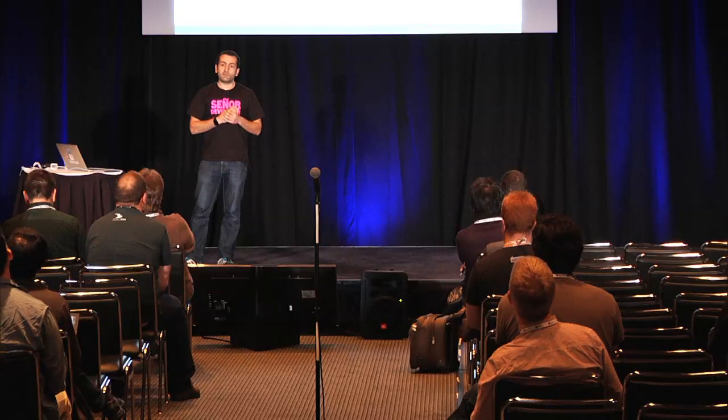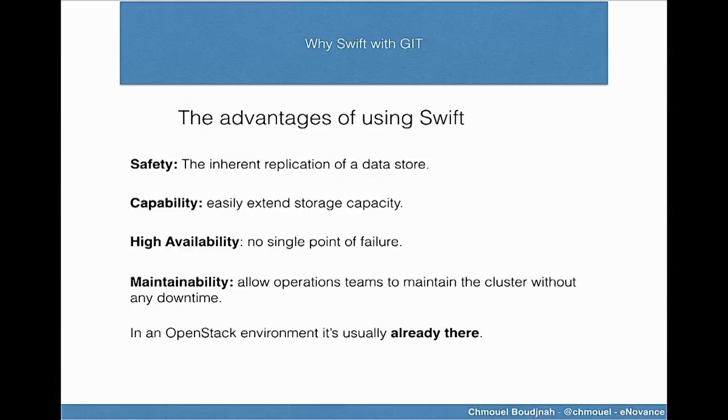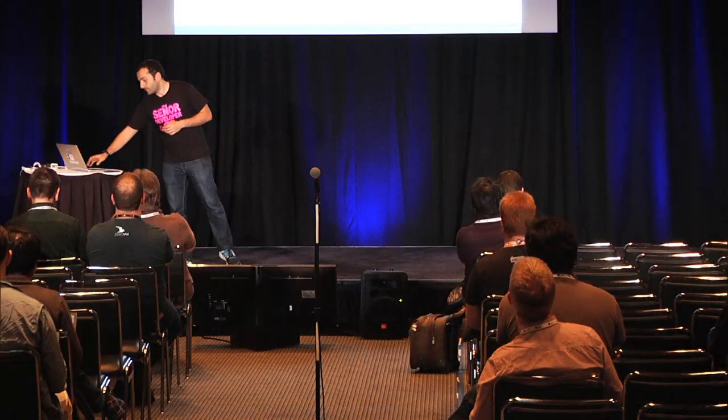So what are the benefits? The advantages of using Swift are really the contrary of the disadvantages of not using it. You're going to be sure your data is stored properly. It has the capability to easily extend your storage. Swift has been designed for no single point of failure, so it's going to be always available. In an OpenStack environment, it's already there — you don't have to spin up a server the old-school way. You can use whatever Swift you have, or even a public provider like HP Cloud or Rackspace Cloud. So you can have backups everywhere if you want.